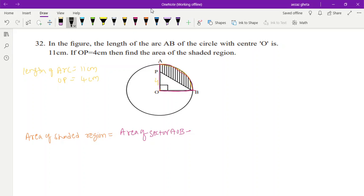Area of sector AOB minus area of what? You should minus area of triangle AOB. See, if you have this sector, correct, and if from this sector you minus this triangle like this, then you will get this shaded region.